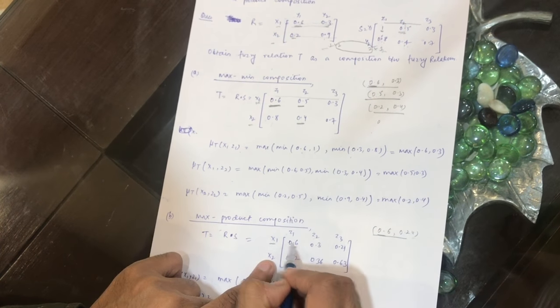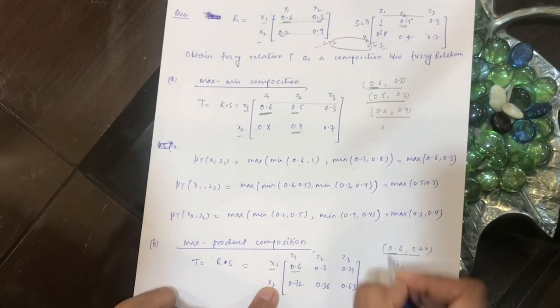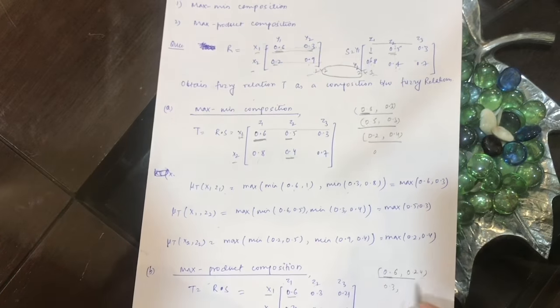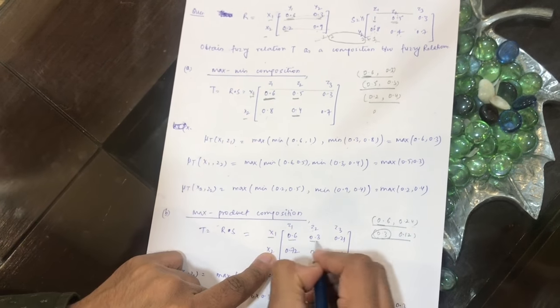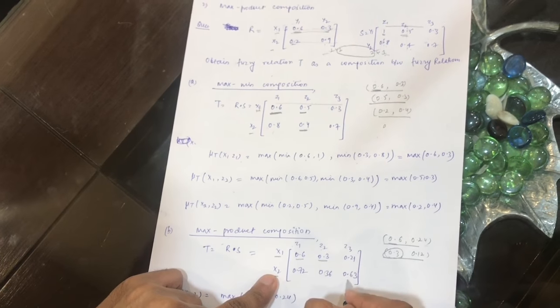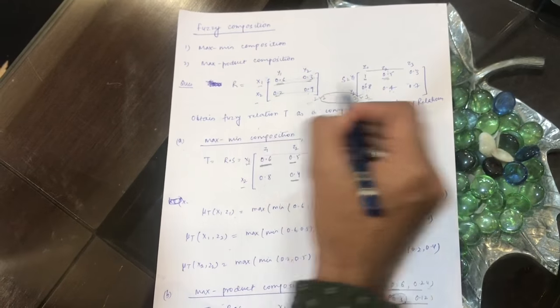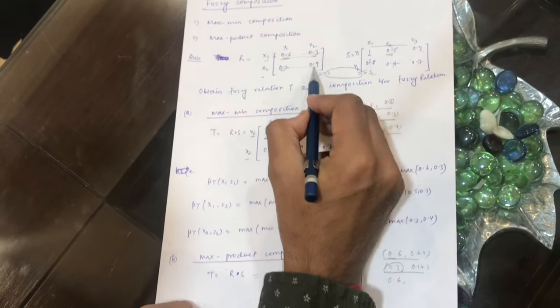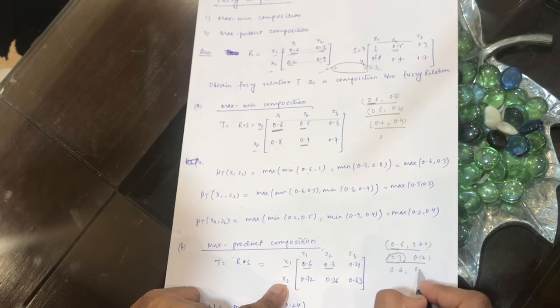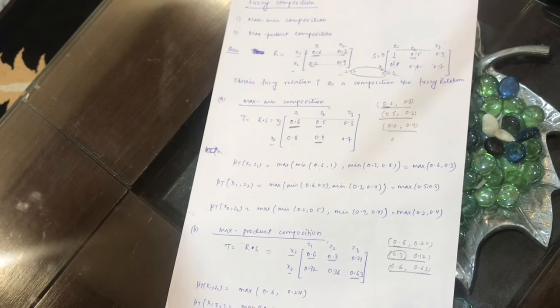For x1, z2 — first row and second column — we compute 0.6 × 0.5 = 0.3 and 0.3 × 0.4 = 0.12; the maximum is 0.3. For x2, z3 — second row and third column — we compute 0.2 × 0.3 = 0.06 and 0.9 × 0.7 = 0.63; the maximum is 0.63, so 0.63 goes in that position.